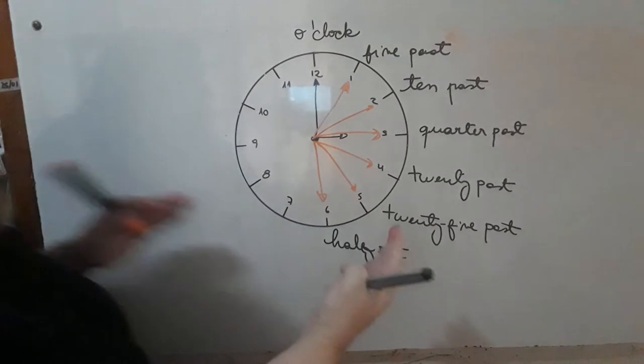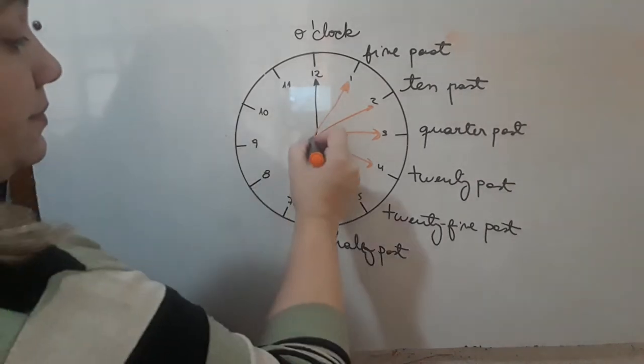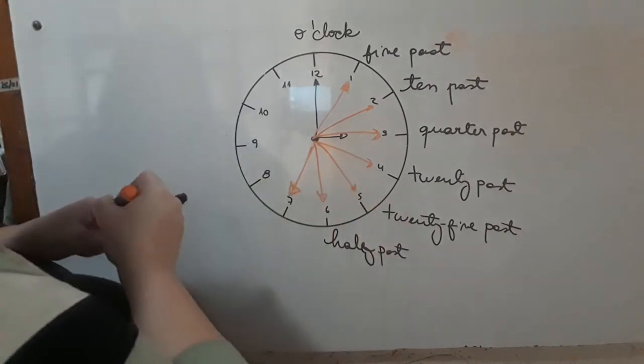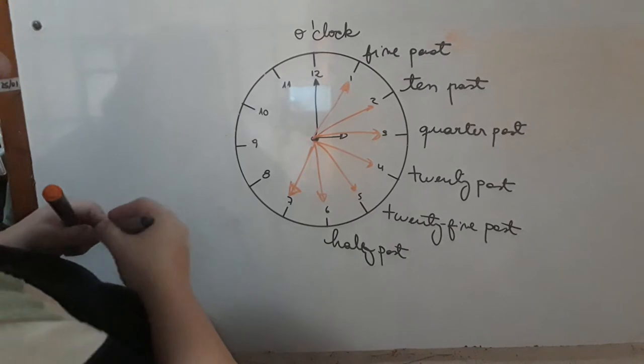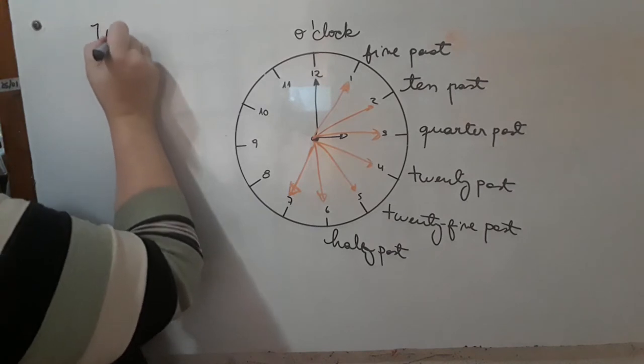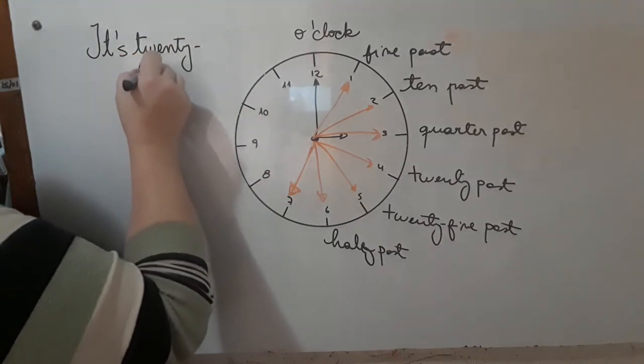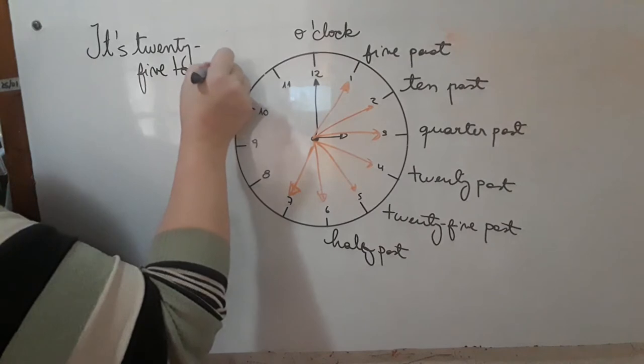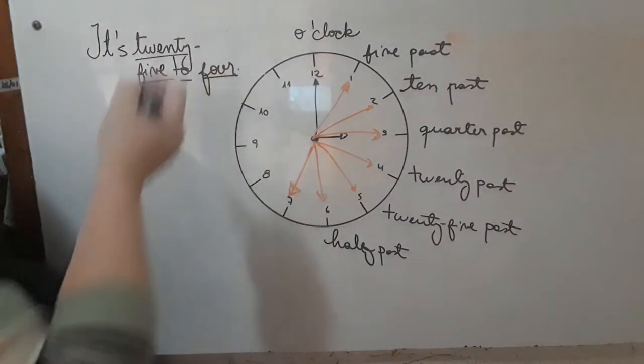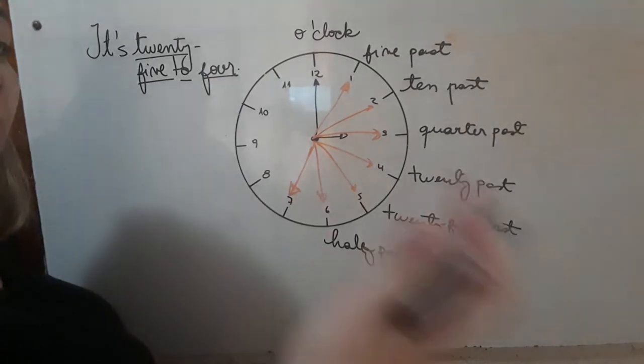Y acá es cuando decimos, como en castellano, los minutos que faltan para la próxima hora. Acá nosotros en castellano diríamos, cuando la del minuto está en el siete, diríamos menos veinticinco. Son las cuatro menos veinticinco. Y en inglés vamos a decir, it is twenty-five, five, two, four. Veinticinco para las cuatro. En castellano decimos, son las cuatro menos veinticinco. En inglés decimos, son las veinticinco para las cuatro.